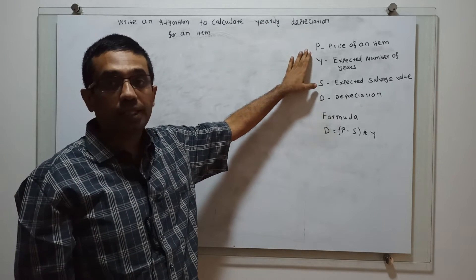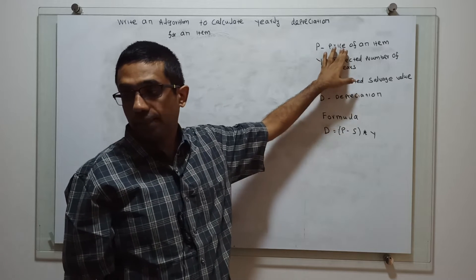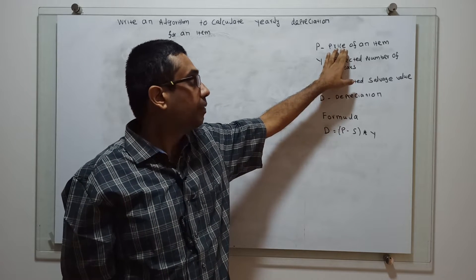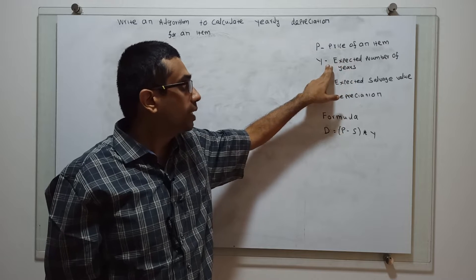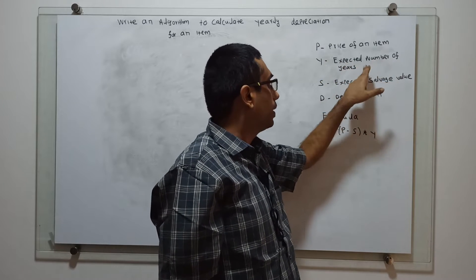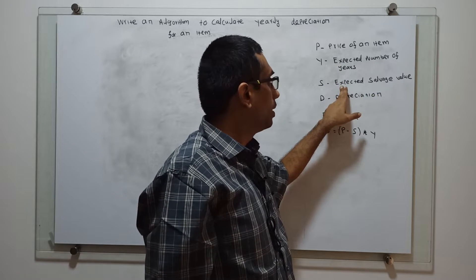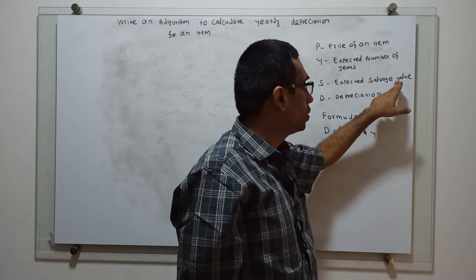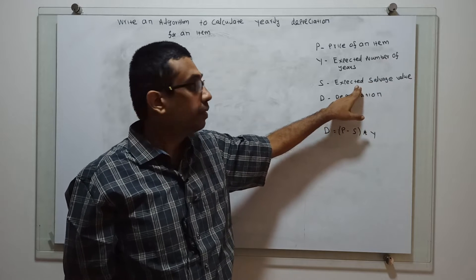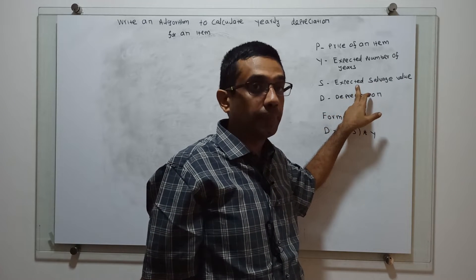First, we have to understand the terms. P stands for price of an item. Y stands for expected number of years. S stands for expected salvage value — that means the book value of the item after the depreciation is complete.